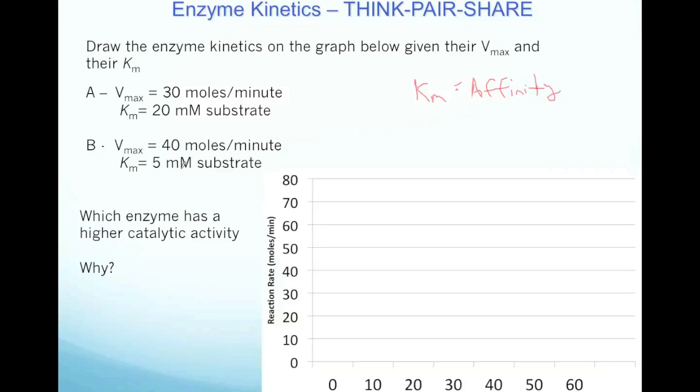Km equals affinity for substrate. So when you're looking at the Km of an enzyme, the Km here is 5 and the Km here is 20. So B not only has a higher Vmax than A, it also has a higher affinity for its substrate than A, which means that it takes less substrate to work as efficiently as A does. And so B here is the better enzyme of the two because of those parameters.